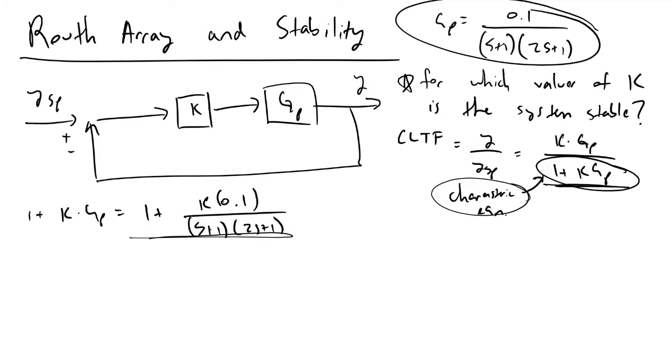If we now combine these two terms, what we'll find is that we'll have (S plus 1) times (2S plus 1) plus 0.1 times your gain of your controller K. And this is equal to 2S squared plus 3S plus 1 plus 0.1 KC. So now that we've determined the numerator of our characteristic equation, we can actually go about determining and building our Routh array.